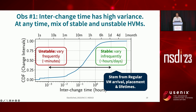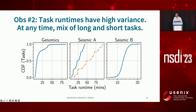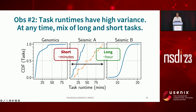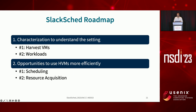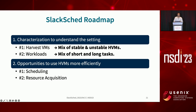We do the same exercise for our workloads. The CDF of the task runtimes shows that task runtimes also have high variance. There are tasks that are short, running for a few minutes, and there are tasks which are long, running up to an hour. So not all harvest VMs are the same — some are stable, some are unstable. Likewise, not all tasks are the same. We can use these observations to improve the execution of workloads.